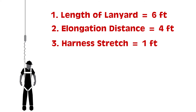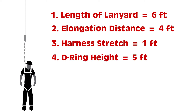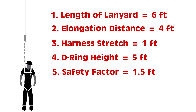Next we're going to look at the harness stretch. Because of the immense force put on the equipment, they calculated a one-foot harness stretch into the calculation. After that, we're going to look at the D-ring, or dorsal D-ring height. In the past they used the height of an individual, but now they actually use the height from the dorsal D-ring, which is going to be five feet. Lastly, we're going to look at our safety factor, which is going to be 1.5 feet.